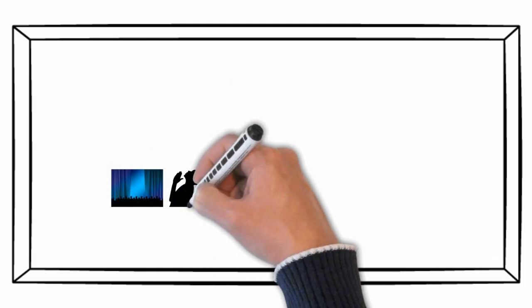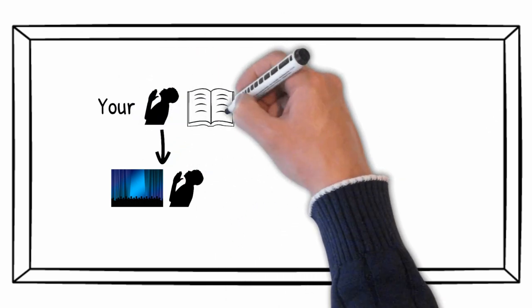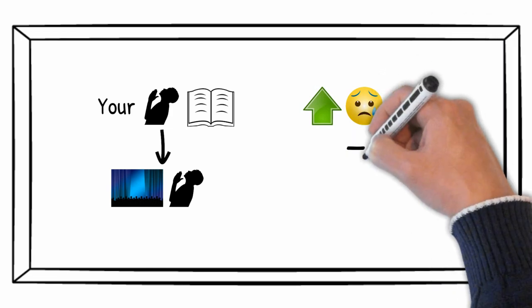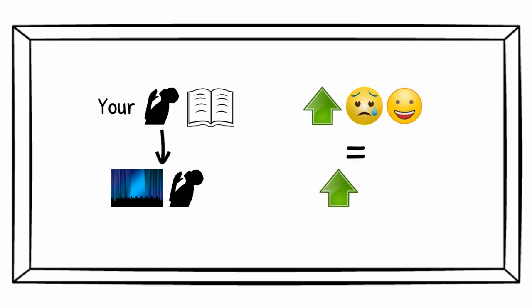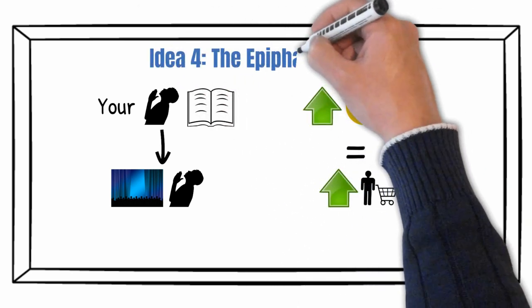Another thing you could do to get the audience to believe in your opportunity is tell them the story of how you initially started to believe it yourself. The more they feel the emotions that you did during that story, the more likely they are to switch. Idea number four is the epiphany bridge.